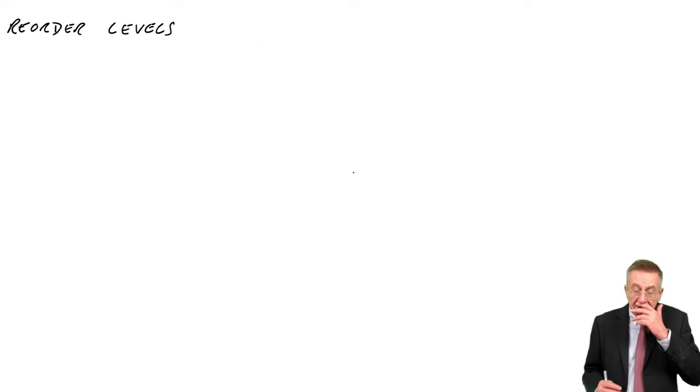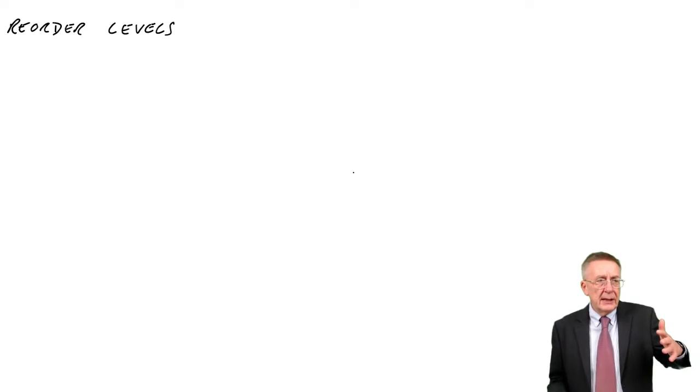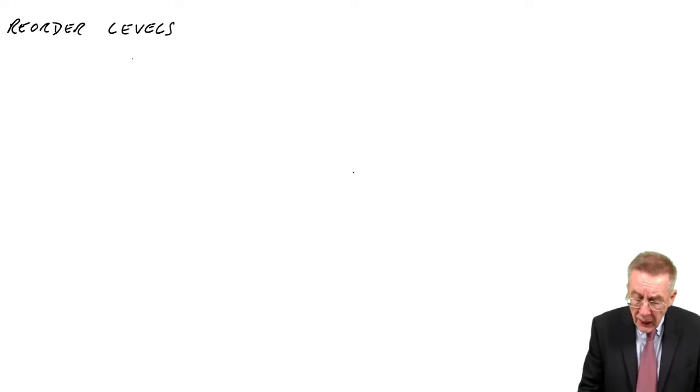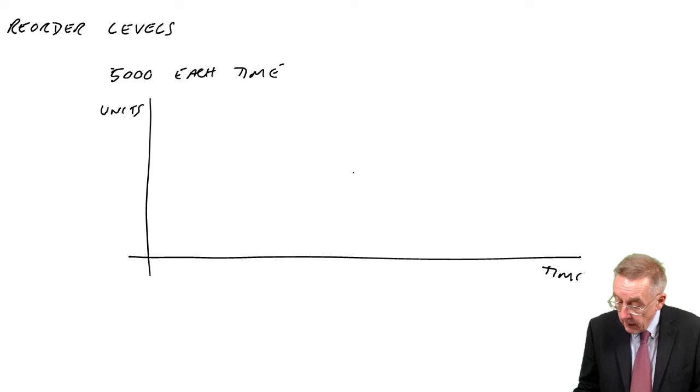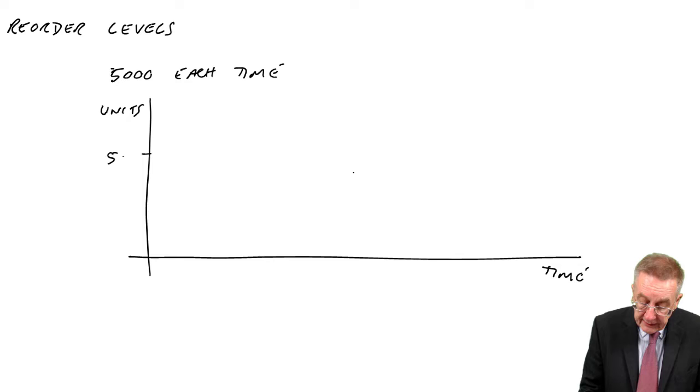And what it relates to is this. If you think back to the earlier lectures on economic order quantity, if we were ordering 5,000 each time, I've drawn this little graph several times, but if we looked at the level of inventory over time, we start with 5,000.